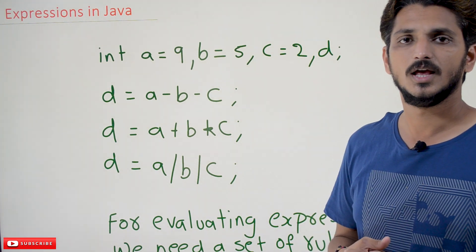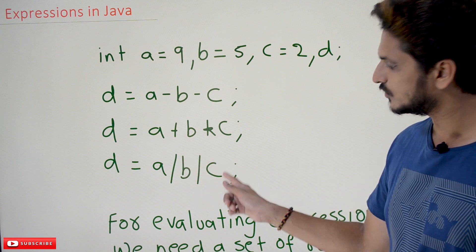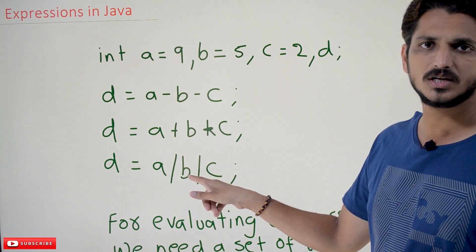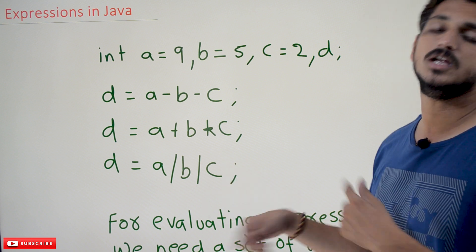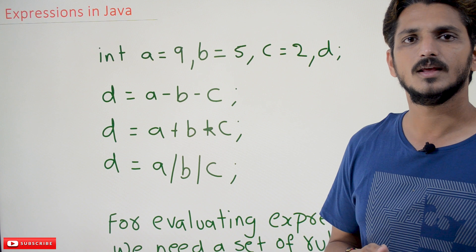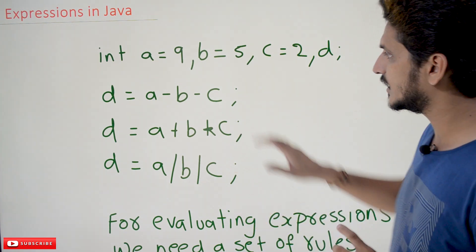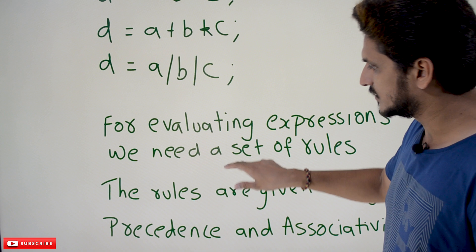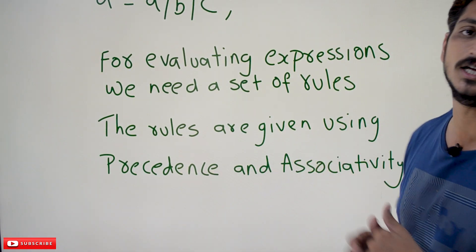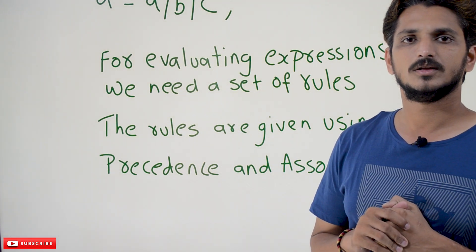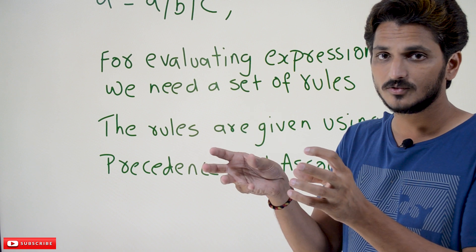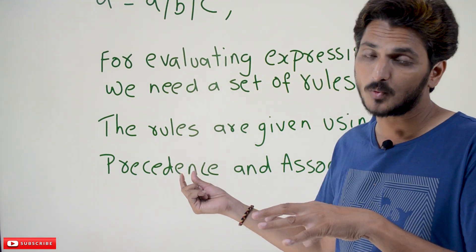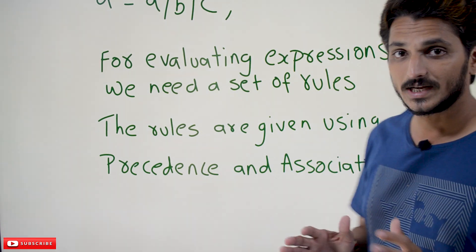Similarly, for a / b / c — which is 9 / 5 / 2 — if 5 / 2 is done first you get a different answer than if 9 / 5 is done first. So during evaluation, for every expression we need a set of rules. Those rules are given using precedence and associativity. What is precedence, what is associativity, and how these concepts are used in evaluating expressions — we are going to discuss these in our next class.